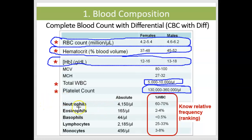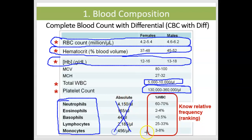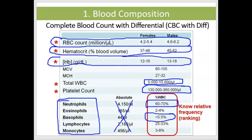As far as knowing the different types of white blood cells — neutrophils, eosinophils, basophils, lymphocytes, and monocytes — I don't want you to know the absolute numbers. Those are kind of hard to memorize, but you should know the relative frequencies. For example, neutrophils make up the highest proportion of white blood cells and basophils make up the lowest. I have a little trick for remembering this frequency that I'll talk about in a minute.